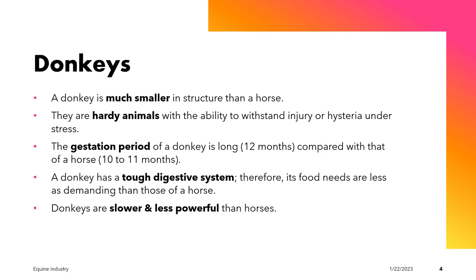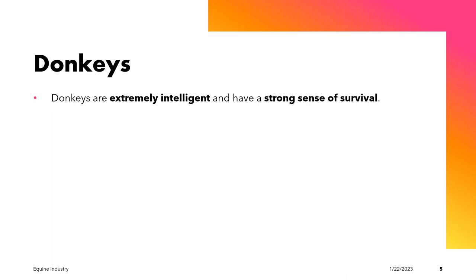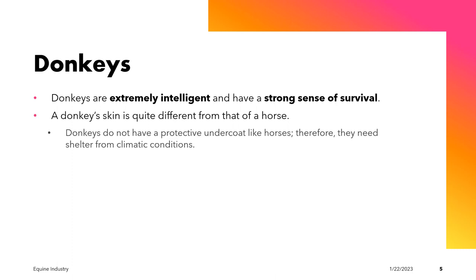In terms of strength and power, donkeys are considered to be slower and less powerful compared to horses. Another characteristic is that they are considered to be extremely intelligent animals with a strong sense of survival — again, they are hardy animals. In terms of the skin, a donkey's skin is quite different from that of the horse. Donkeys do not have a protective undercoat like horses, therefore they need shelter from climatic conditions.